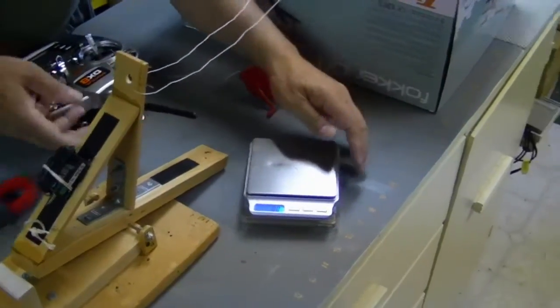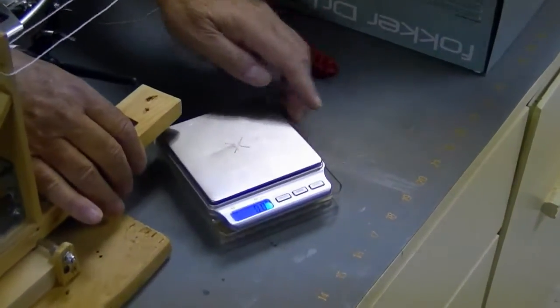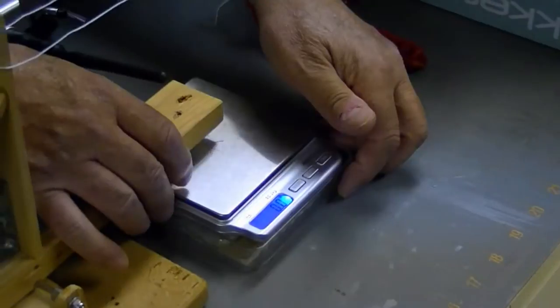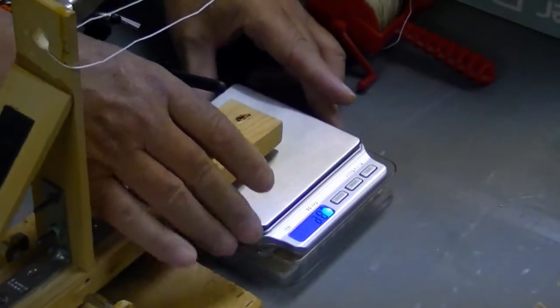I've got it set up to read grams, and I put an X mark in the middle so that I can locate it right under the pressure point on the scale.